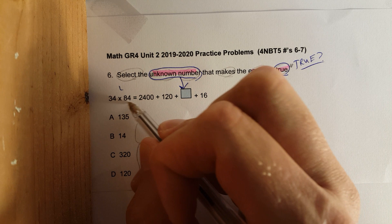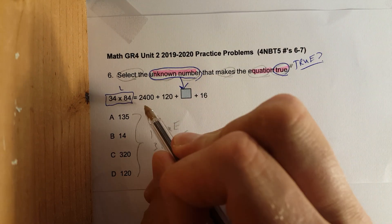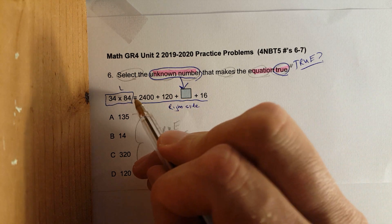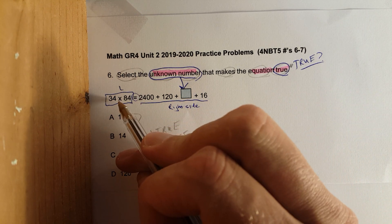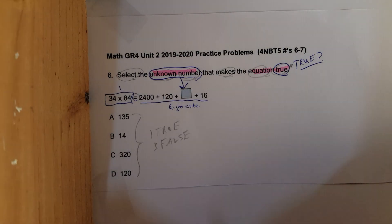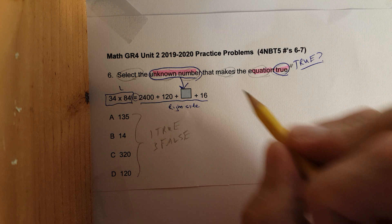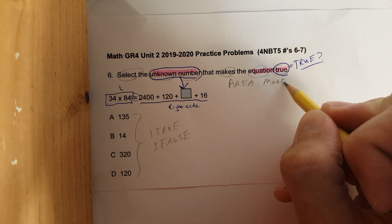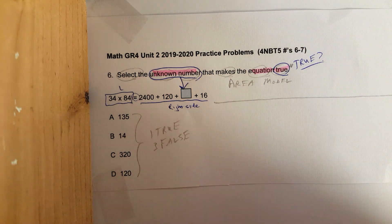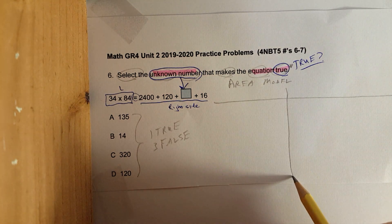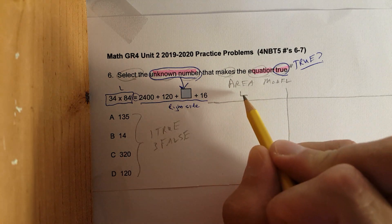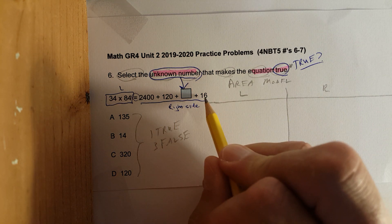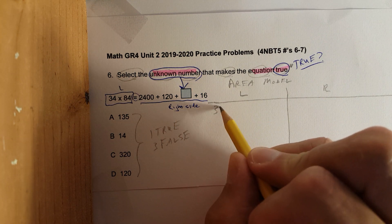L stands for left side — here is the left side of the equation. Here is the right side. Notice the equal sign: this side needs to equal that side. Since we've been doing so much area model, we should probably do more area model. I'm going to set up a little chart — this will be the left side, this will be the right side. On the left side I have 34 and 84.